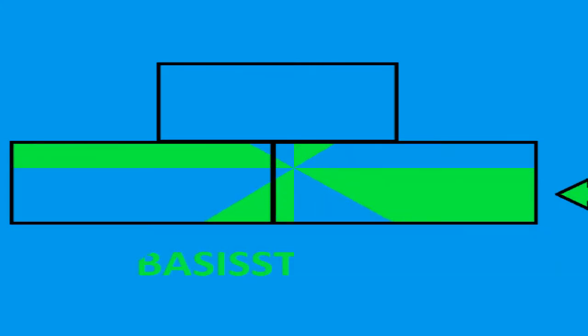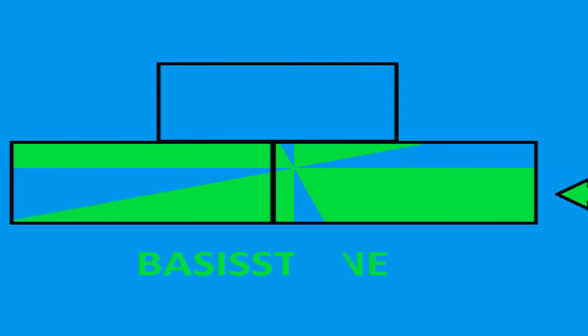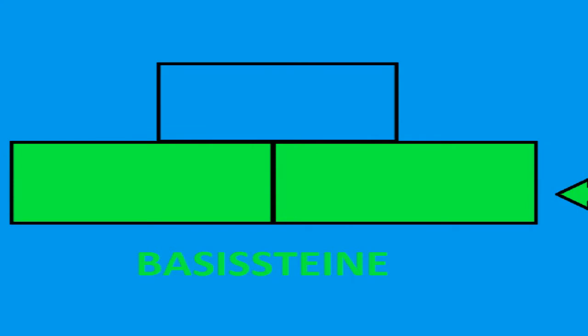Bu bir ufak duvara benziyor. – Aferin ufak dedektif. – Bu bir sayı duvarıdır. Her evin olduğu gibi bu duvarın temel taşı da istikrarı sağlıyor. Bunların ismi Basisteine. [German version:] Das sieht aus wie eine kleine Mauer. – Gut erkannt, kleiner Detektiv. – Das ist eine Zahlenmauer. Wie jedes Haus hat auch eine Mauer Grundsteine, die für die Stabilität sorgen. Hier heißen sie Basisteine.